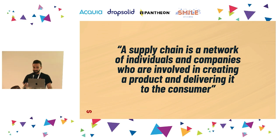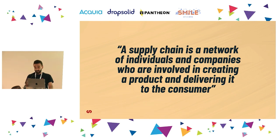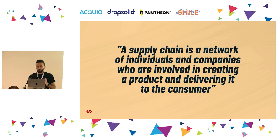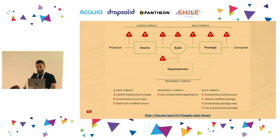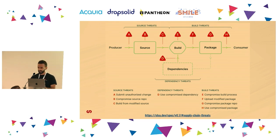To understand what is the software supply chain, I want to start with this general definition: a supply chain is a network of individuals and companies involved in creating a product and delivering it to the consumer. It is generic enough to accommodate any product, from a pair of shoes to a software product like Drupal. This diagram comes from the SLSA framework at slsa.dev, an open source project by the OpenSSF Foundation, a branch of the Linux Foundation. It's a checklist of best practices we can gradually adopt to improve integrity, reduce tampering risks, and improve the security posture of our packages.